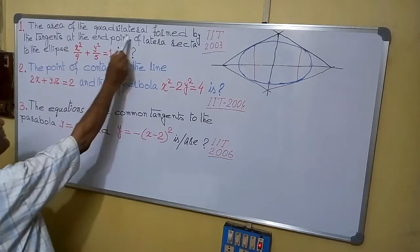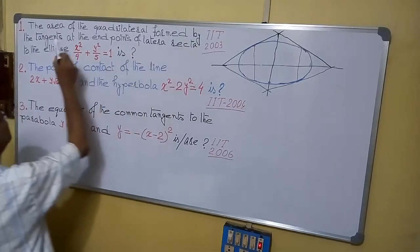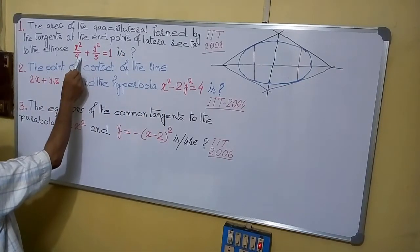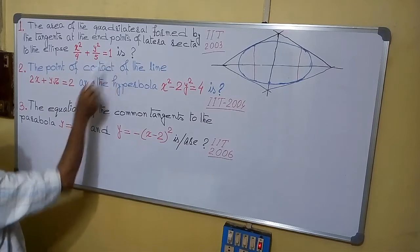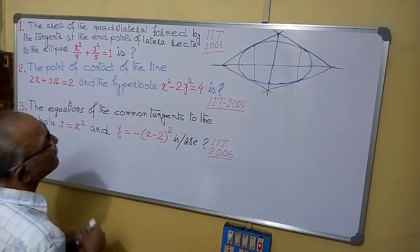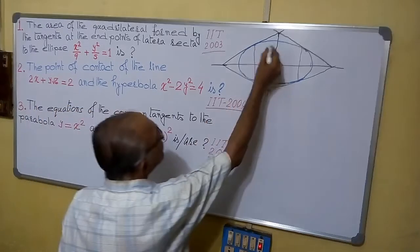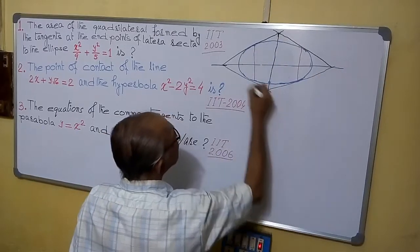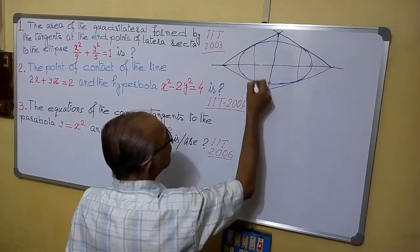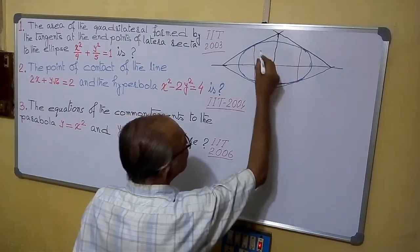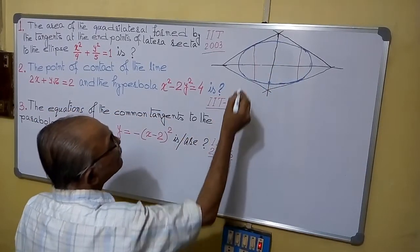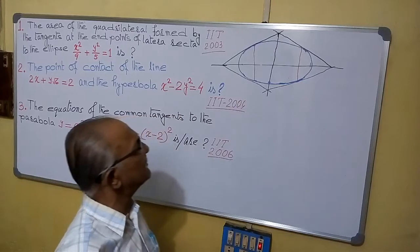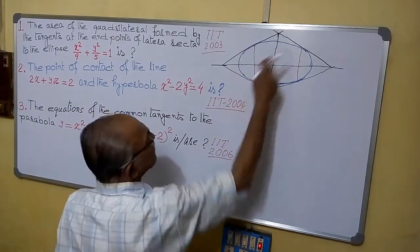The area of the quadrilateral formed by the tangents at the end points of the latus rectum of the ellipse x²/9 + y²/5 = 1. You have to find the area of the quadrilateral. I have already drawn the figure. This is the ellipse and this is the quadrilateral. The tangents are drawn at the end points of the latus rectum. We have to find this area from the figure. The sum will be very easy since these are all identical things.